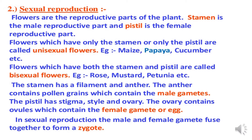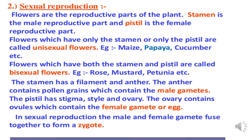The stamen has a filament and anther. The anther contains pollen grains which contain the male gametes. The pistil has stigma, style, ovary, and the ovary contains ovules. In sexual reproduction, the male and female gametes fuse together to form a zygote.